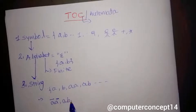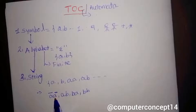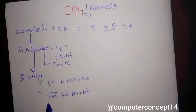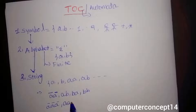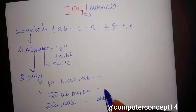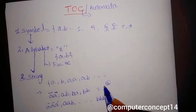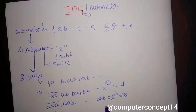A collection of symbols — so this is a string, so this is a sequence of symbols, so this is a string. A string is a sequence of symbols.